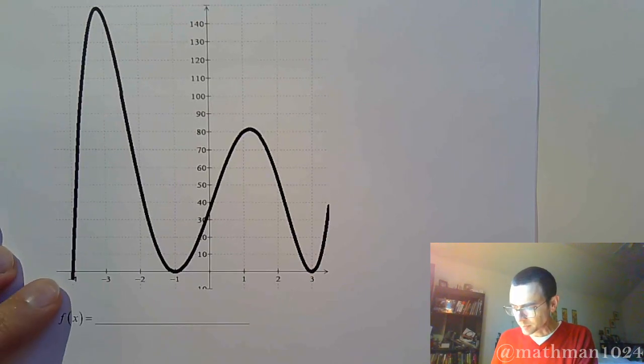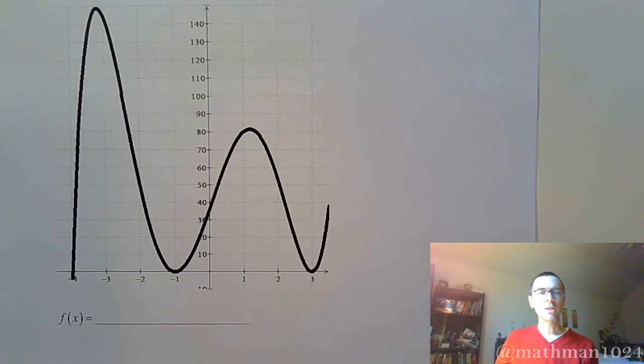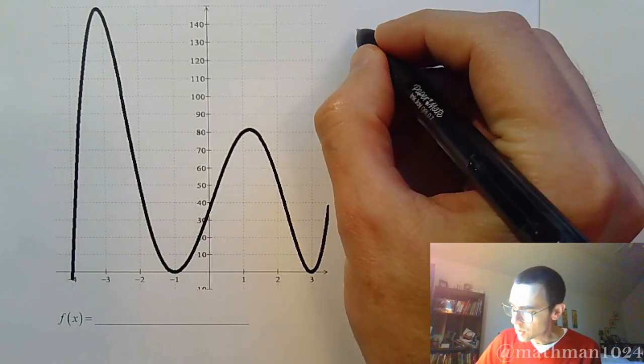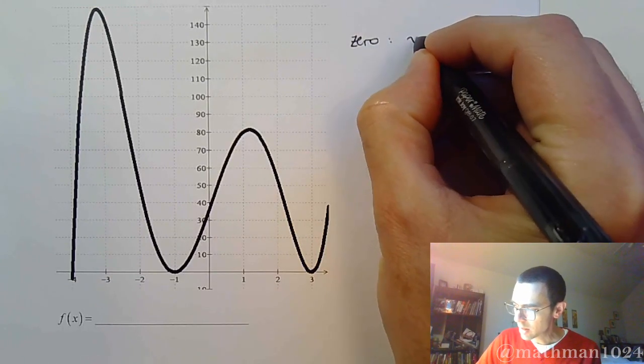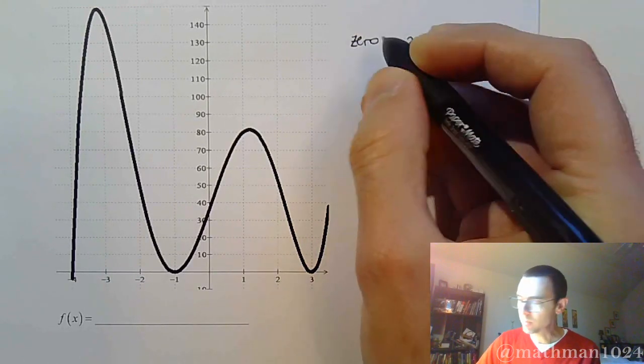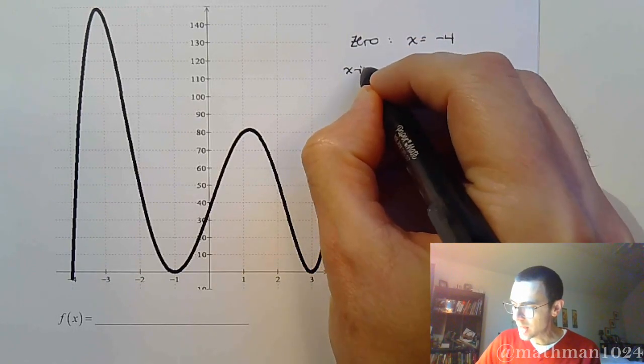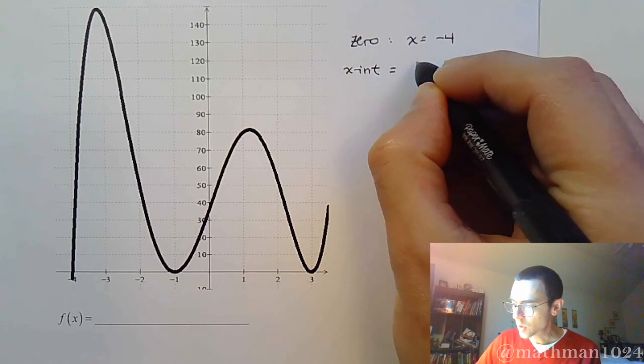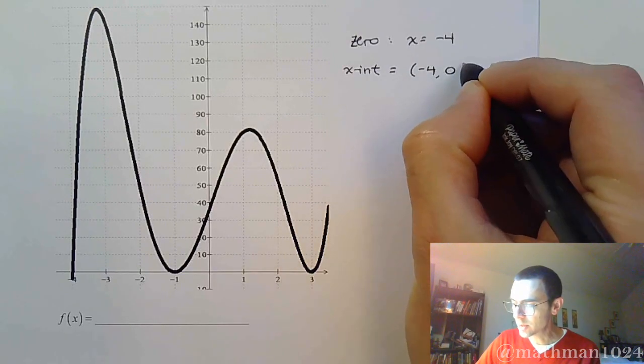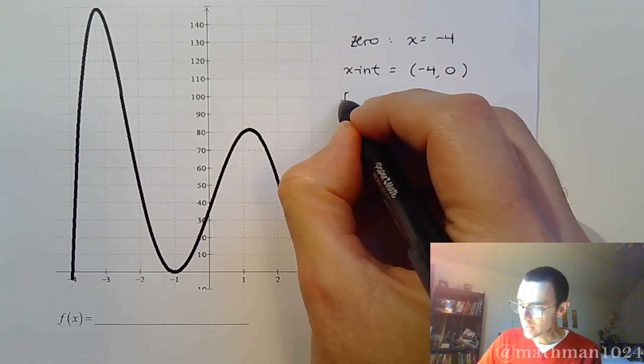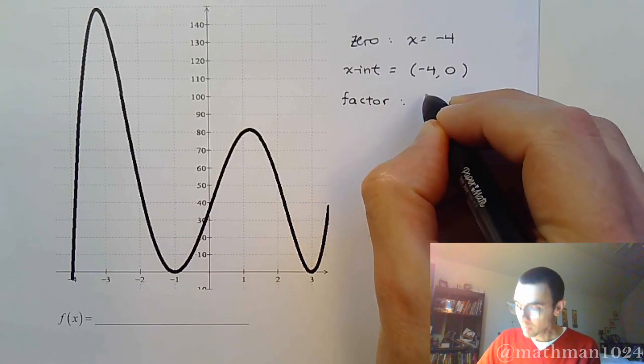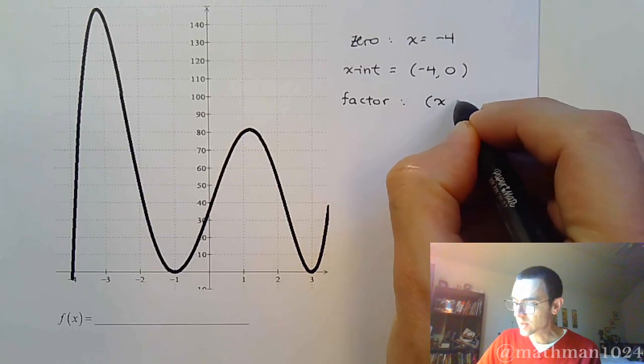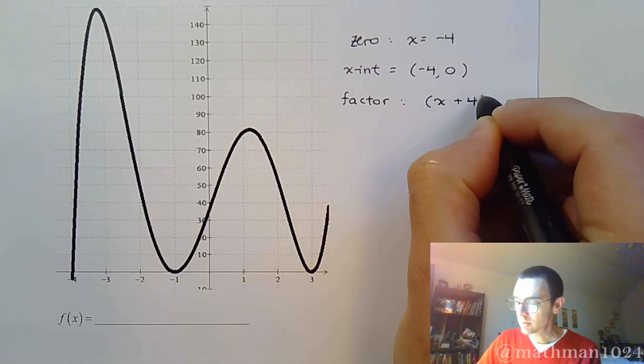So when you look at this, you see this guy right here where he crosses at negative 4. So if he crosses at negative 4, think about what that means. That means you have a zero of x equals negative 4. We understand that in the picture corresponds to an x-intercept of negative 4 comma 0. And in terms of what that means for the factor for the function,